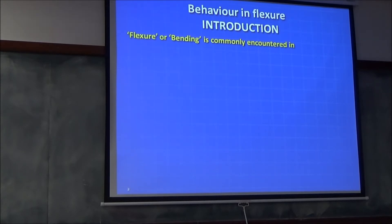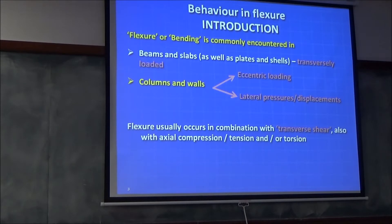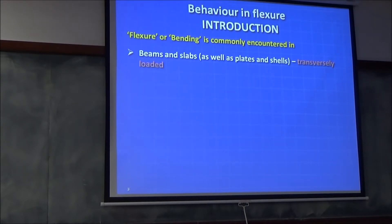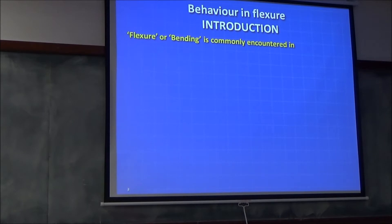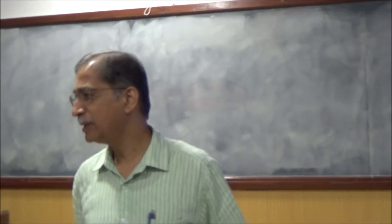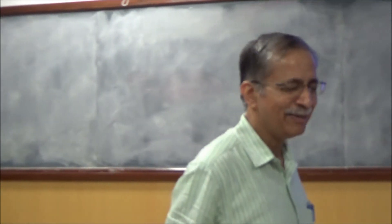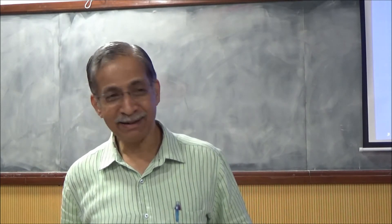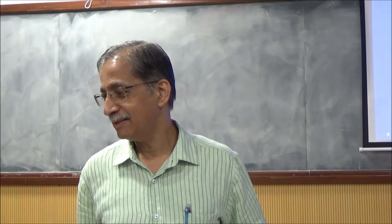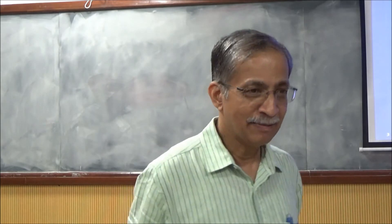So we are now looking at flexure. Flexure is another word for bending. Where do you encounter flexure in reinforced concrete? Beams. What is a beam by definition? A beam is a structural element which resists the lateral loads applied on it through bending. But if you have two end moments as in pure bending, you really don't have lateral loads. So a beam is an element which bends.